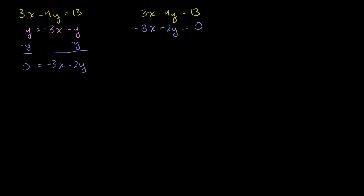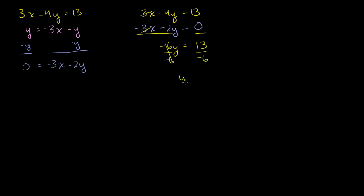So I have negative 3x minus 2y is equal to 0. Let's add the left-hand side of this equation to the left-hand side of the yellow equation, and add 0 to the right-hand side. We're adding the same quantity to both sides. The 3x cancels out, and we're left with negative 4y minus 2y, which gives negative 6y is equal to 13. Dividing both sides by negative 6, we get y is equal to negative 13 over 6.